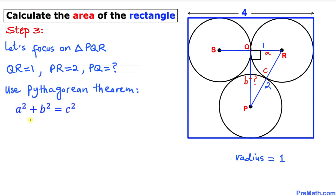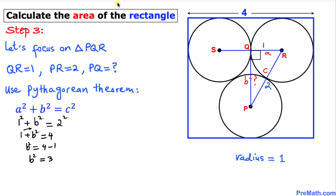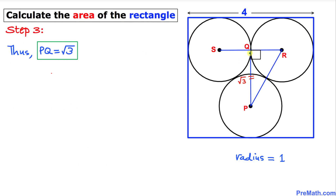Filling in the Pythagorean formula: a = 1 and c = 2, so 1² + b² = 2², which gives 1 + b² = 4. Moving 1 to the other side: b² = 4 − 1 = 3. Taking the square root of both sides: b = √3. So the length of PQ is √3.